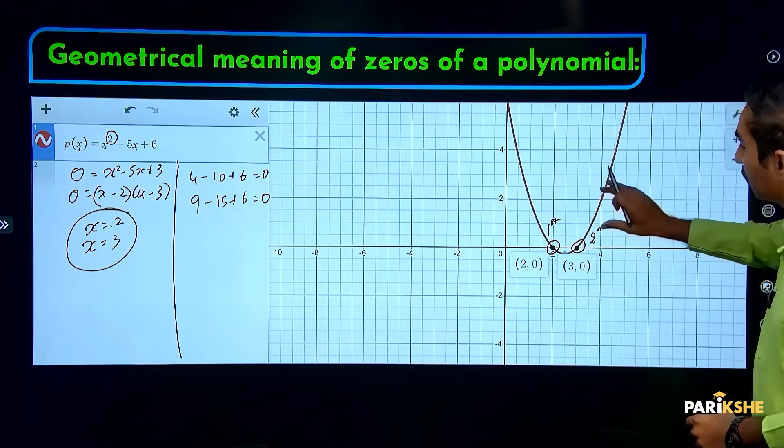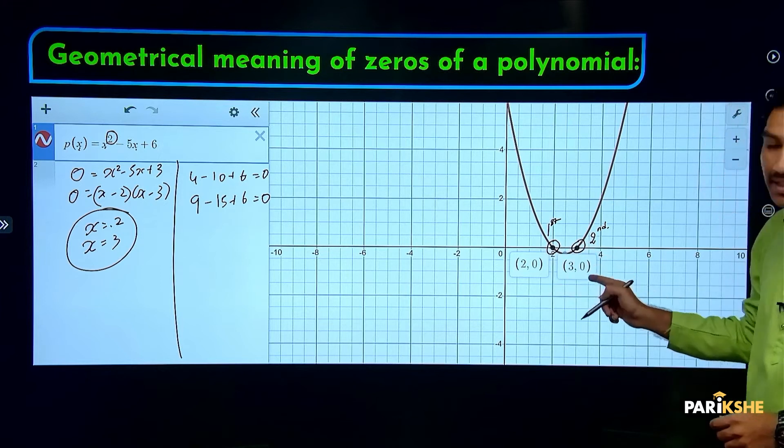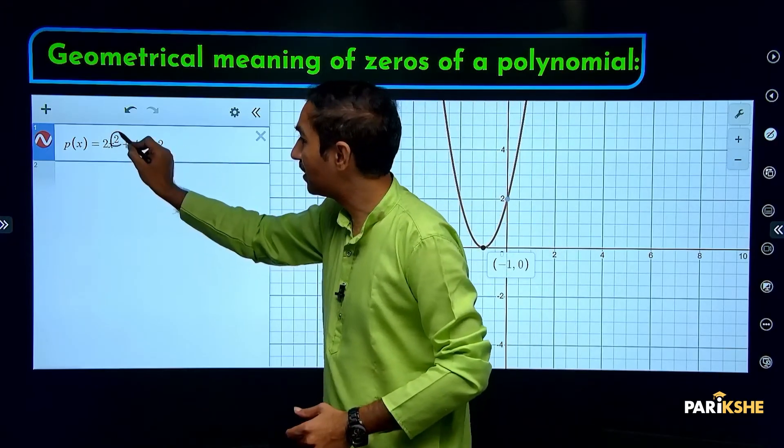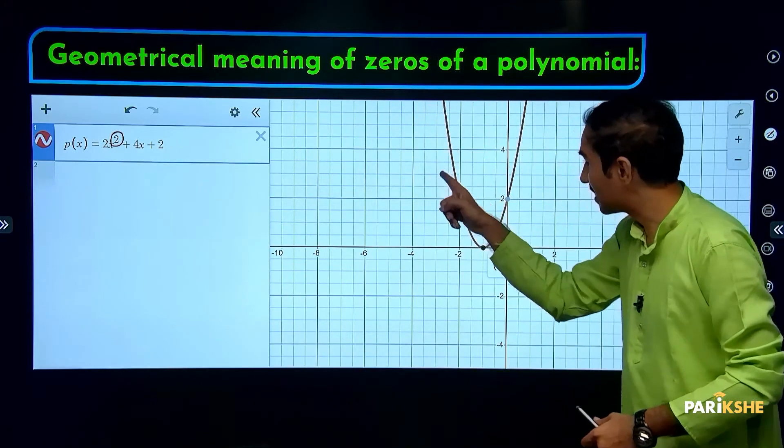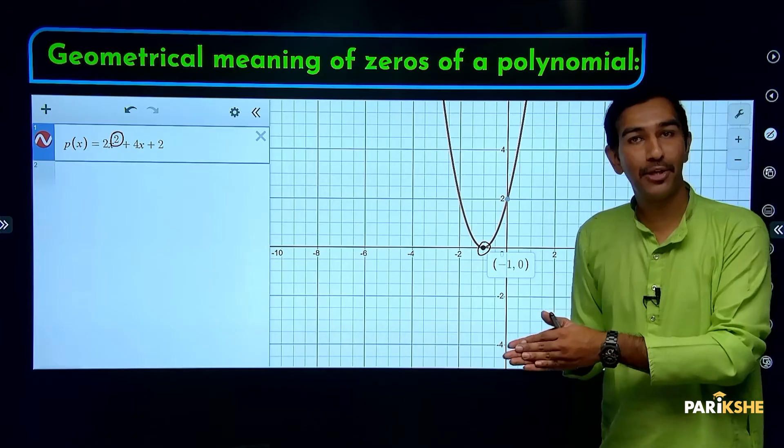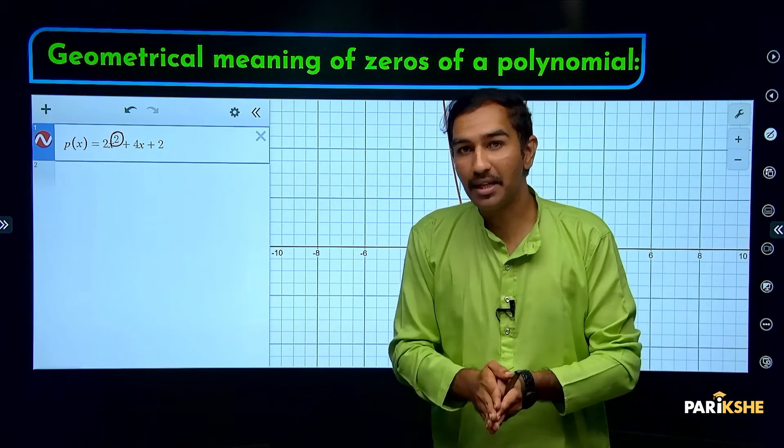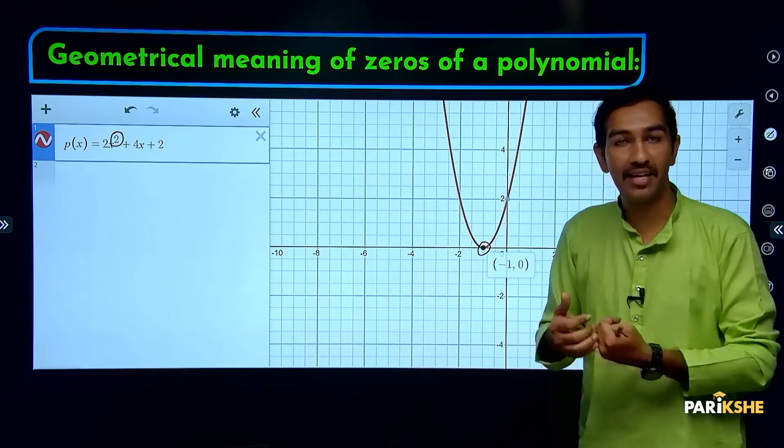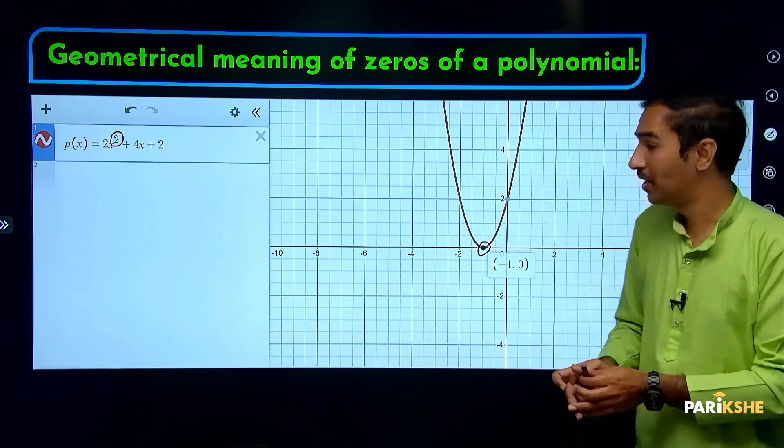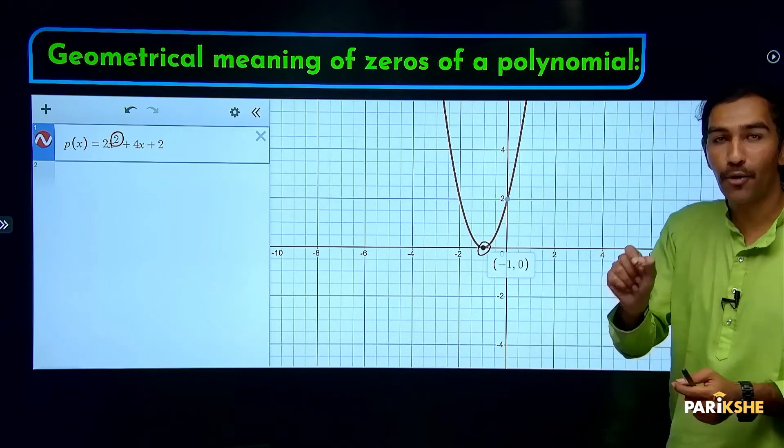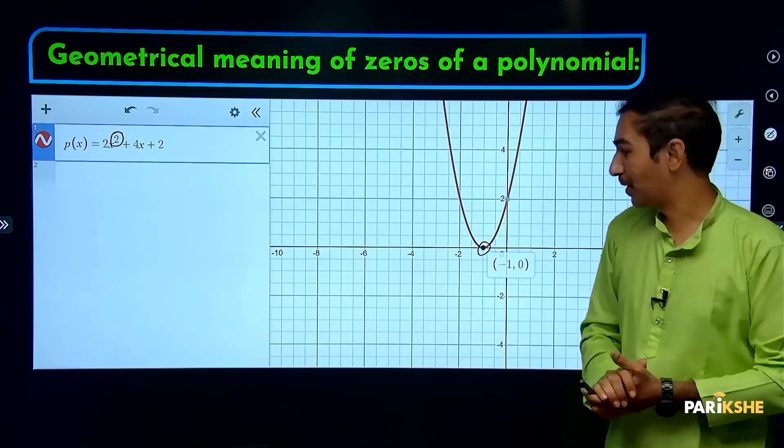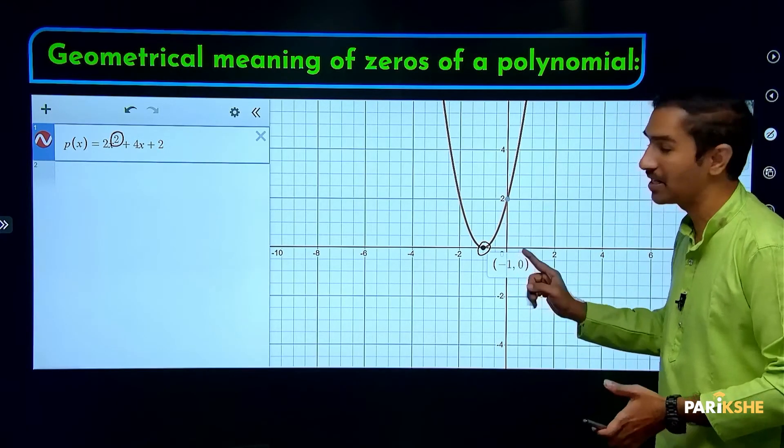In the previous example, the quadratic polynomial had degree 2 and two zeros came. But look, here's another quadratic polynomial with highest power 2. This graph meets the x-axis at only one point. So one zero came here: at minus 1.